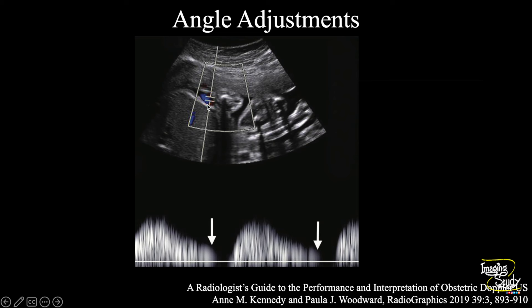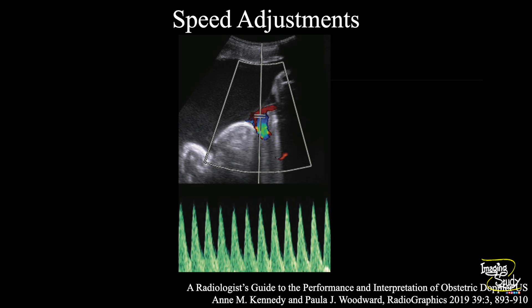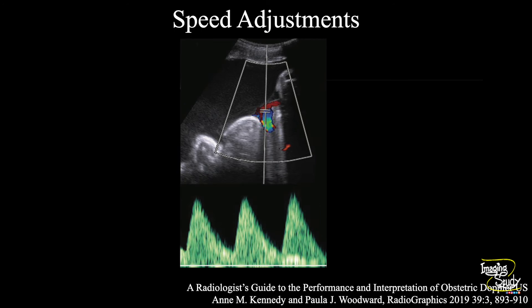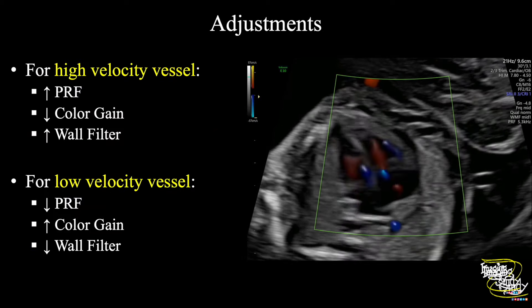Always try to see the vessel vertically. If the vessel looks horizontal, try to see it from a different angle to see it vertically — that will give you a better wave and better measurement. For speed adjustment: if the wave looks good but you want to measure in detail, try to increase or decrease the speed of the wave using the speed option in your machine. There is also a focal zone option — when you want to see a vessel, you should use the focal zone so that area will be focused by your machine.